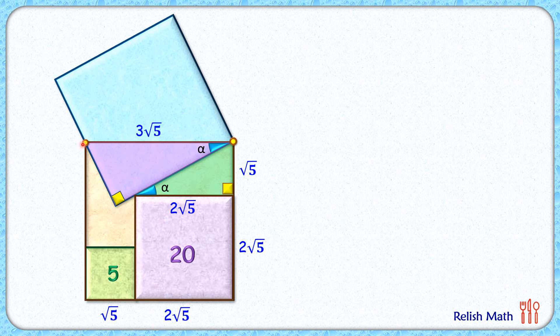So for the pink triangle, if the perpendicular is a centimeter, then the base will be twice of it or 2a centimeter. Now in this pink triangle, if we apply Pythagoras theorem, we will get a square plus 2a square is 3 root 5 square.